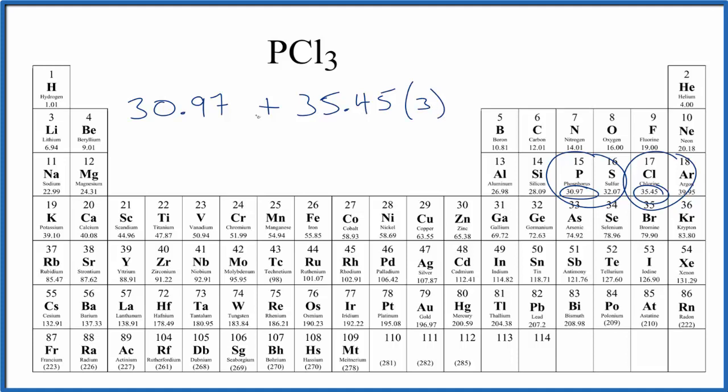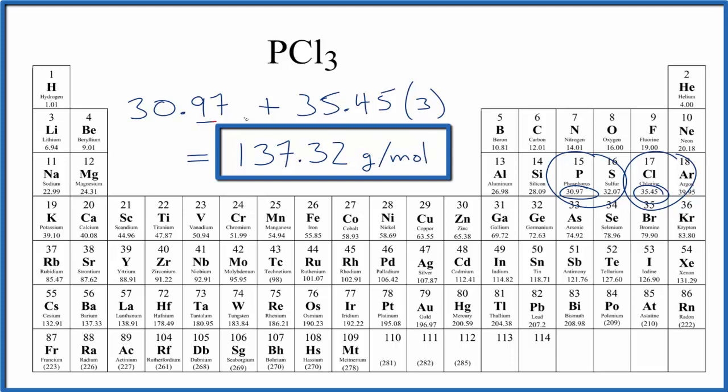We multiply this by three, add it to the 30.97, and we get 137.32 grams per mole. My periodic table rounds to two decimal places. If yours rounds differently, you might get a slightly different answer.